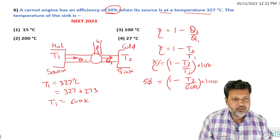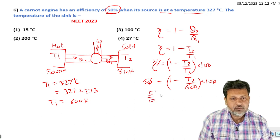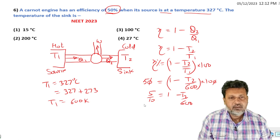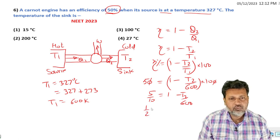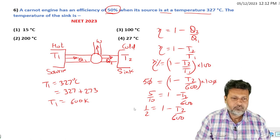Five by ten equals one minus T2 by 600. So one by two equals one minus T2 by 600.